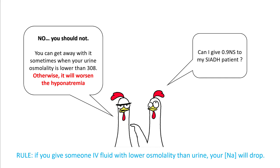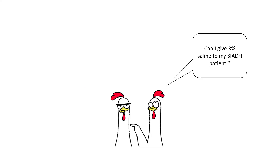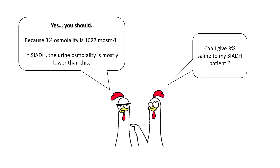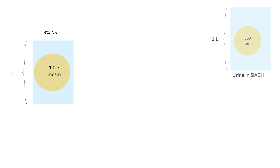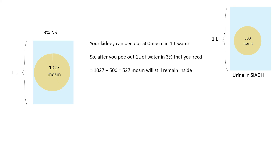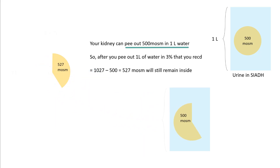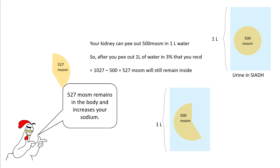As a rule: if you give IV fluids with lower osmolality than the urine, sodium will drop. Can you give 3% saline? Yes — 3% saline has an osmolality of 1,027 mOsm/L, which is almost always higher than urine osmolality in SIADH. For a patient with urine osmolality of 500 mOsm/L, 527 mOsm of the 1,027 will remain inside after the kidneys excrete 500, raising sodium effectively.